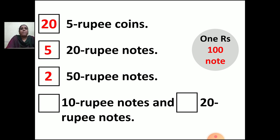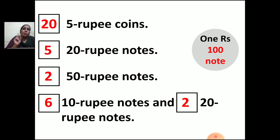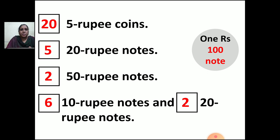Now, how many 10 rupee notes and 20 rupee notes — both together — should you have to make 100 rupees? You have to add 10 rupee notes plus 20 rupee notes and it should make 100 rupees. You will take 6 ten-rupee notes, so 6 tens are 60 rupees. How much is left? 40. You will take 2 twenty-rupee notes. 2 into 20 is 40. And 40 plus 60 is 100. So 6 ten-rupee notes and 2 twenty-rupee notes will make 100 rupees. This is how you have to show.